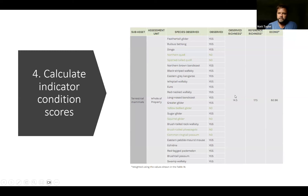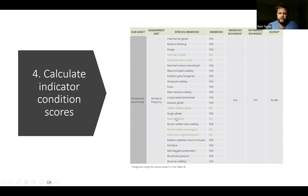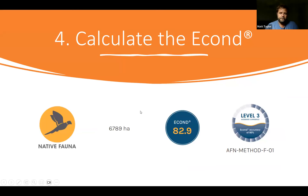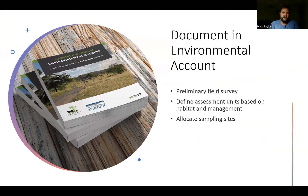Here's our measure of reference richness — what we would have expected to find on the property pre-1750, weighted by that likelihood factor. Our observed richness, also weighted by likelihood of occurrence, gives an overall Econ of 82 — outstanding really, for a working cattle station. The Econ is essentially a measure across the entire property of the proportion of species observed compared to what you'd have expected to find there — as simple as that. All these findings, including the stratification process and reference species listing, are then documented in an environmental account.